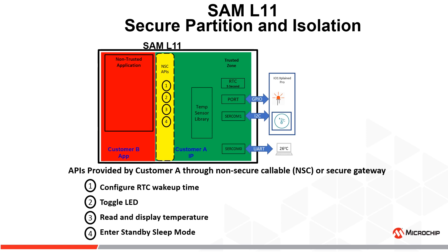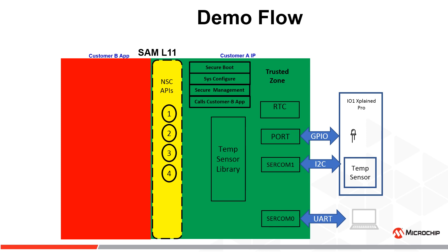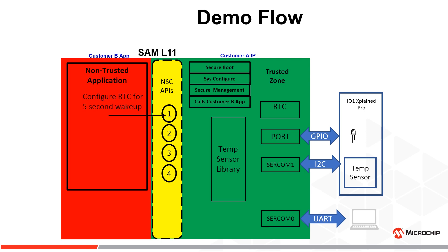Customer B cannot access any other resources in the trusted zone other than the APIs provided by Customer A. Let's now look at the demo flow. SAM L11 securely boots in the trusted zone, configures the system, performs secure management by ensuring RTC, GPIO, and SERCOMs are assigned to the trusted zone, and then calls the Customer B application. Once Customer B's app is called, it requests to configure RTC for a 5-second periodic wake-up through API 1, which redirects the request to the temperature sensor library.